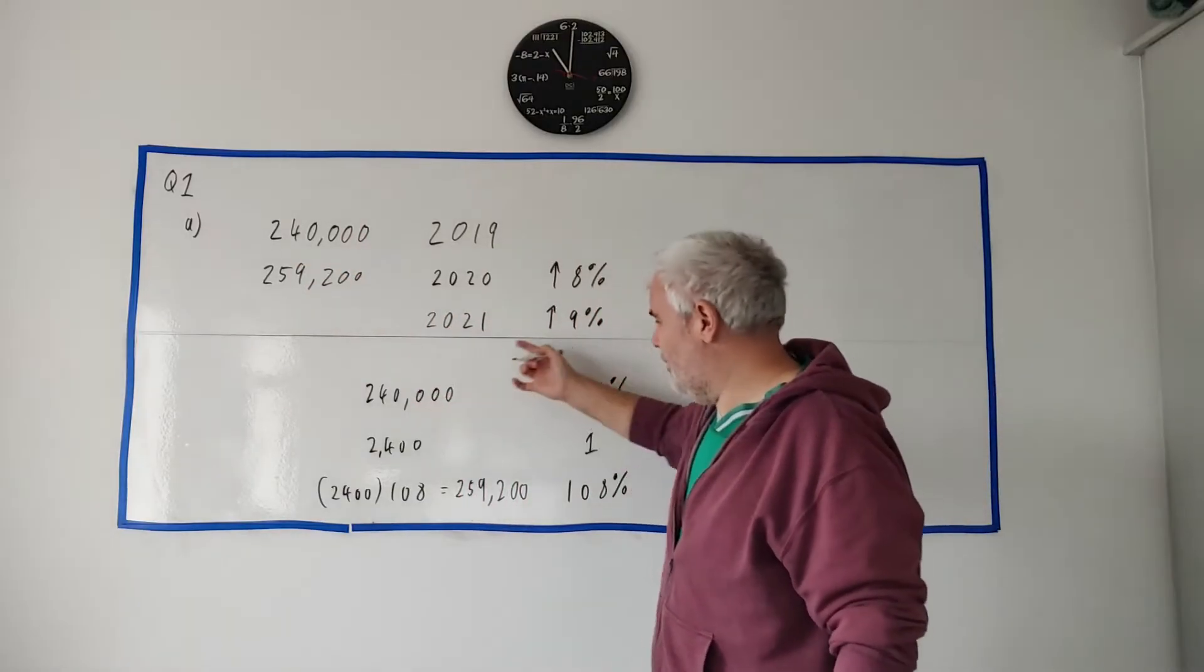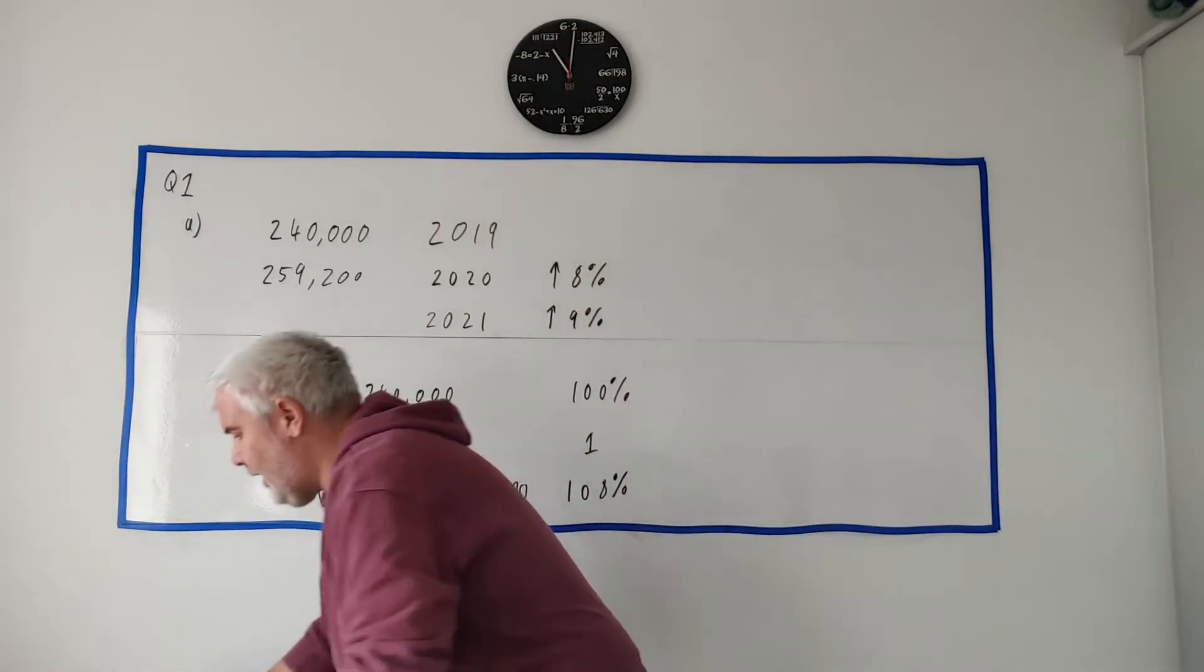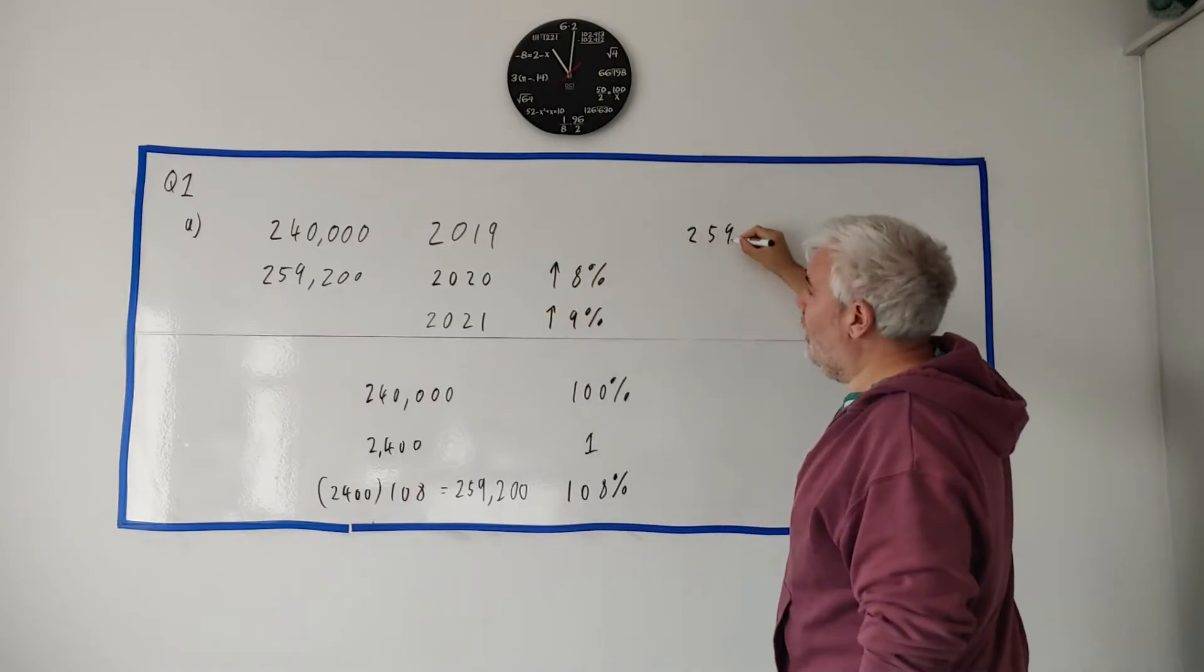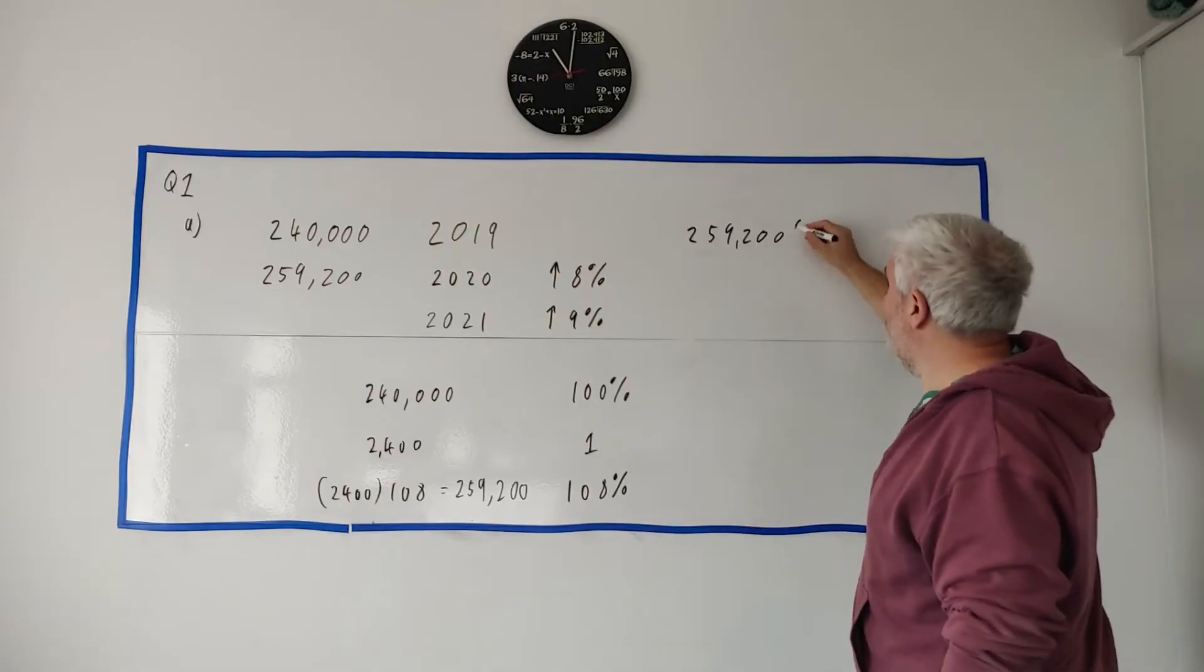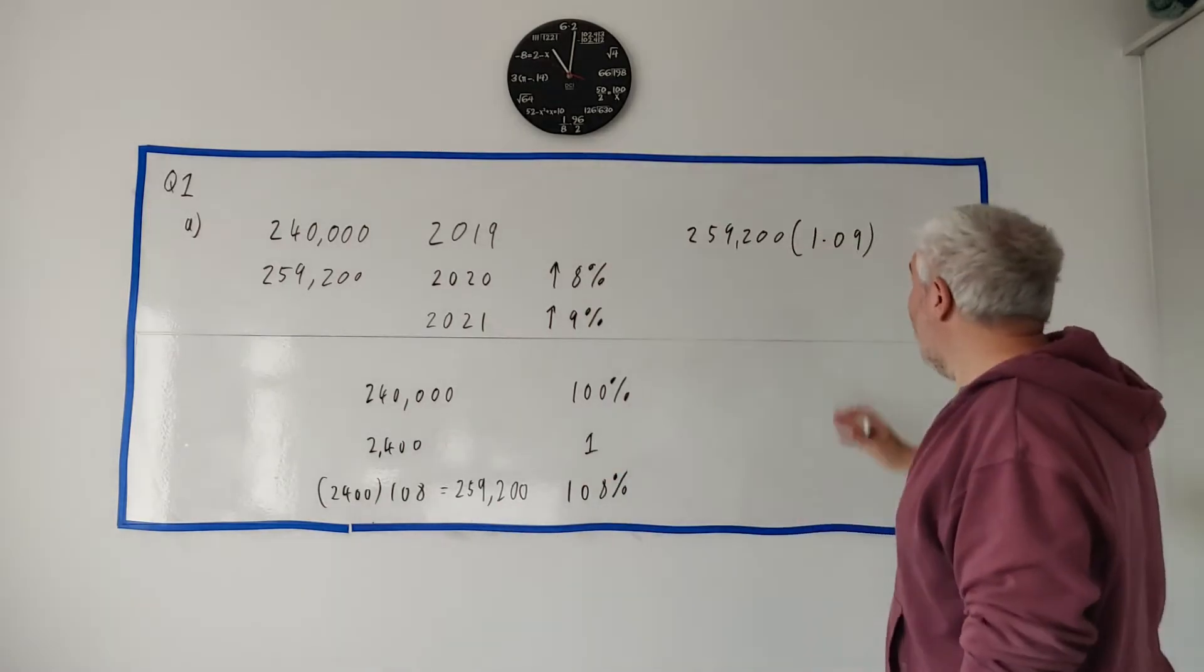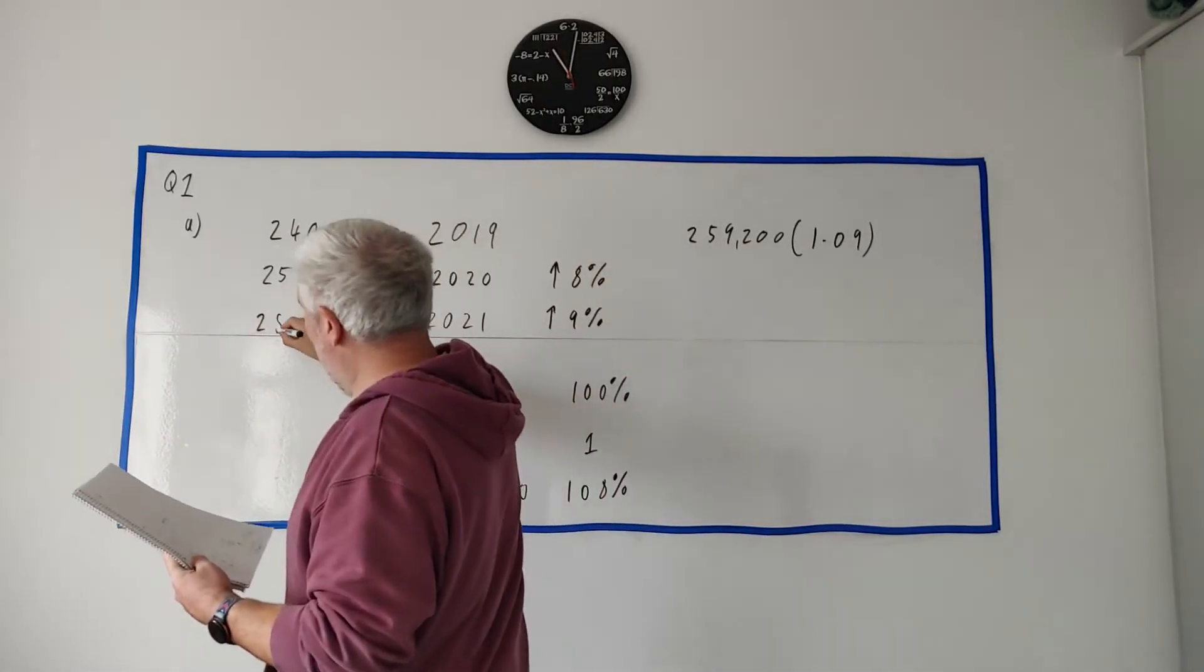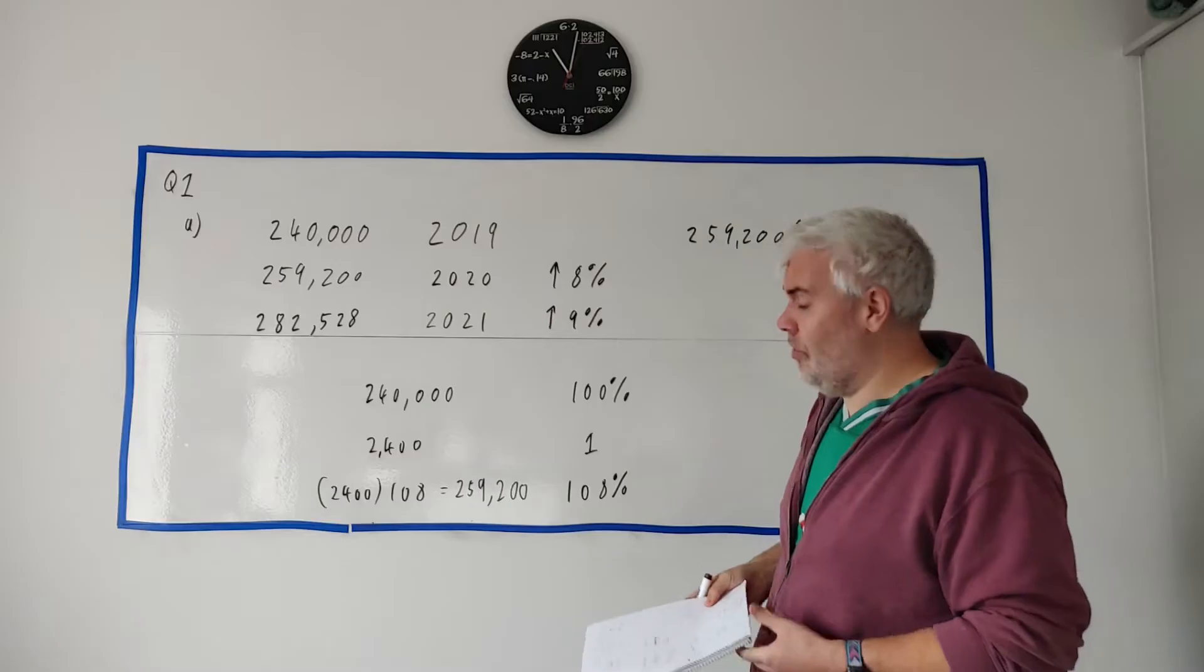Just do the exact same method to get this next number but I'll show you the quicker way. The quicker way is to start with this number 259,200. This is to increase to 9% and we're just going to multiply that by 1.09. That's all I did here in two or three steps. This sum here should equal 282,528. And that's how you do this.